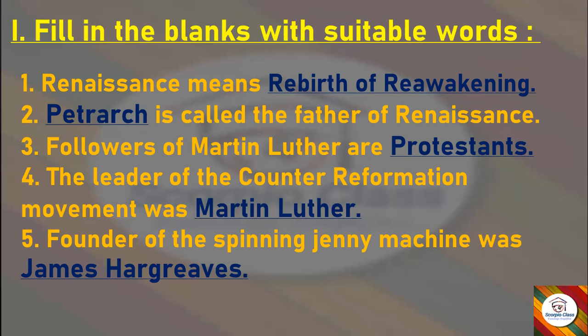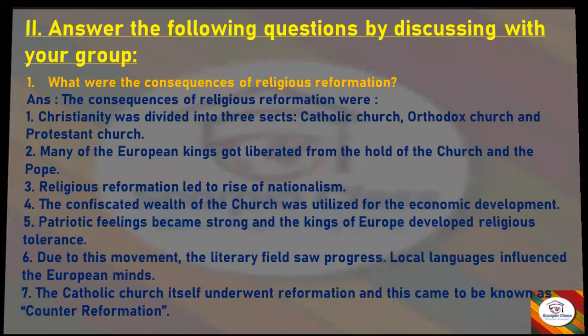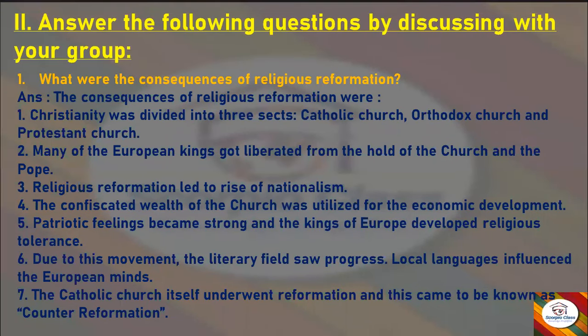Next is question and answer. Let's start with the first question: What were the consequences of the religious reformation? Answer: The consequences of religious reformation were that Christianity was divided into three sects — the Catholic Church, the Orthodox Church, and the Protestant Church.